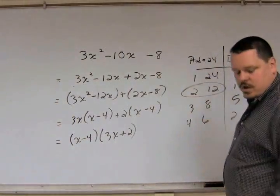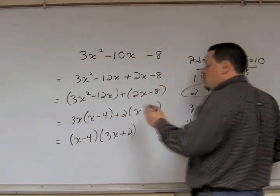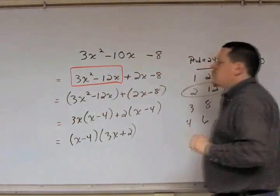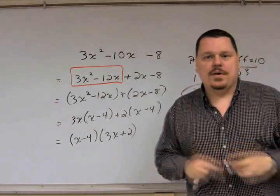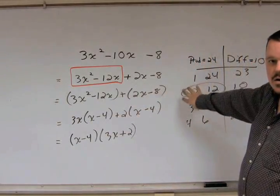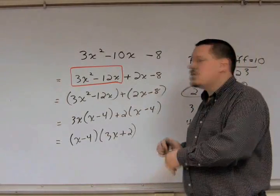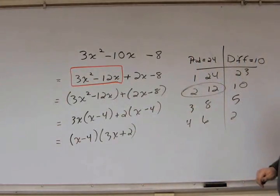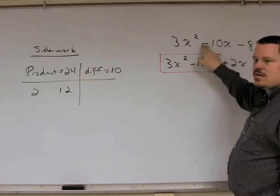Okay, we're going to focus on just the first two terms here. In this case, it's the 3x squared minus 12x. The rest of it will come later once we get to our answer. But we're only going to be focusing on the 3x squared minus 12x.